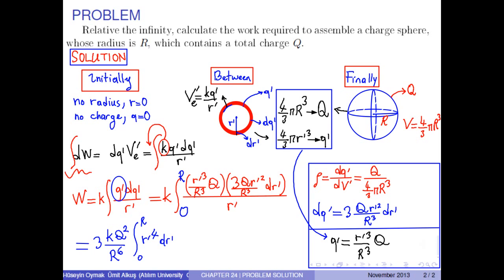The result of the integral is r' to the 5 over 5, with the integral limits 0 and capital R, which gives capital R to the 5 over 5.